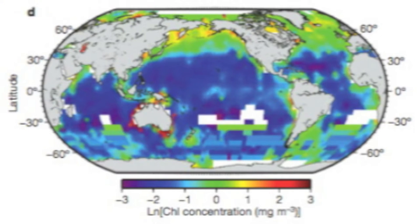Since 1979, phytoplankton concentrations have been derived from satellite imaging and have been closely linked to the changes in our climate. However, 35 years of data is just not sufficient to see any long-term trends.